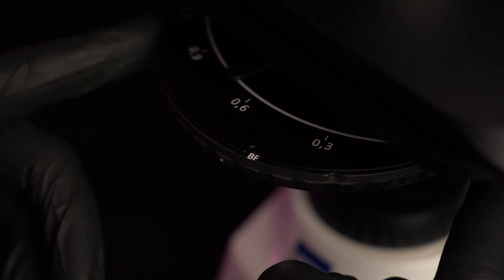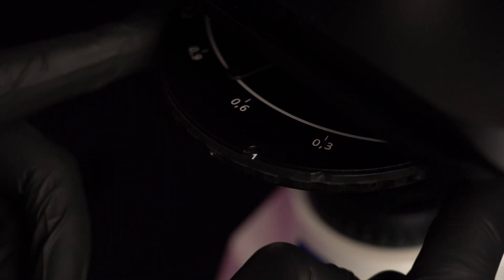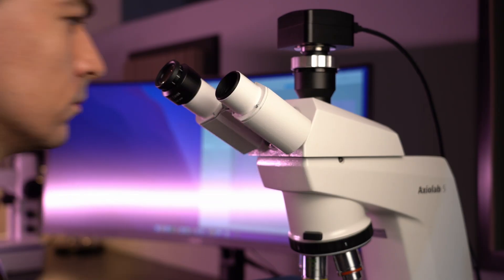Put the phase objective in the light path and install corresponding phase ring in the condenser. Remove the eyepiece or change it with a special telescope.